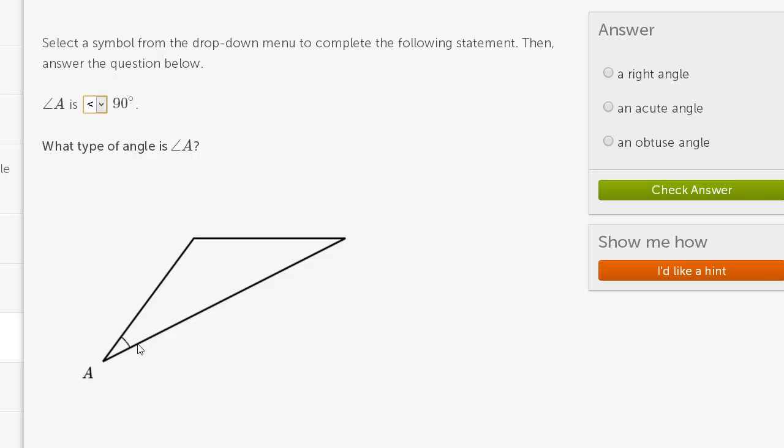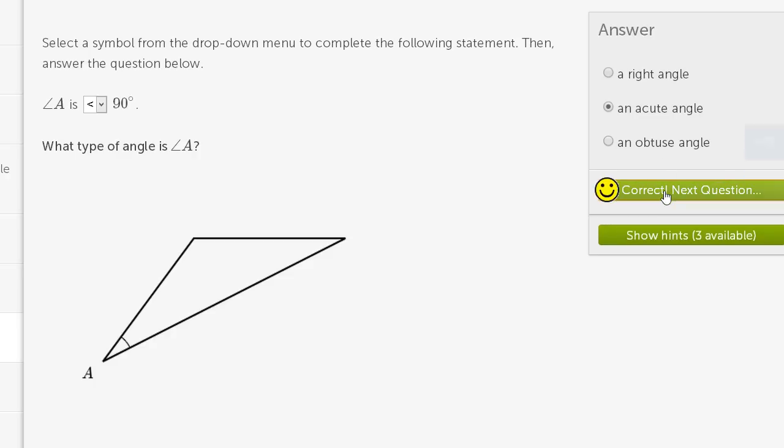So angle A, it's less than 90 degrees. So an angle less than 90 degrees is an acute angle. If it was exactly 90 degrees, it would be a right angle. If it was larger than 90 degrees, it would be an obtuse angle. So I will go with acute angle. We got it right.